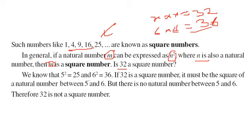So 5 into 5 is 25, 6 into 6 is 36. There is no number between 25 and 36, or there is no natural number between 5 and 6. So there is no square number between 25 and 36. That is why 32 belongs in between; it is not a square number.